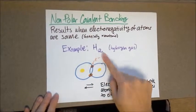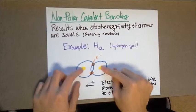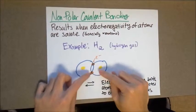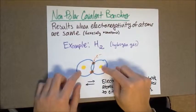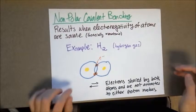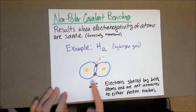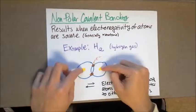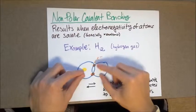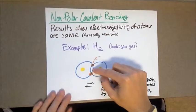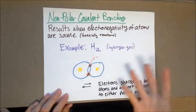This forms hydrogen gas. So of course, here you see these two electrons being shared. This one is from this atom, this one is from that atom. So here, what happens is that the electrons shared by both atoms are not attracted to either proton nucleus because they're pulling with the same force. Therefore, they're remaining in the middle. So in this case, there are no poles.